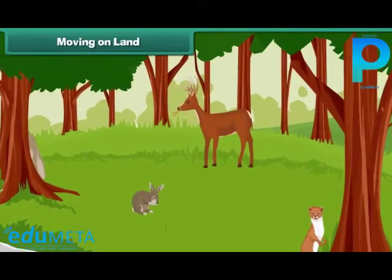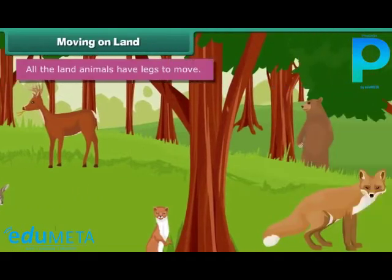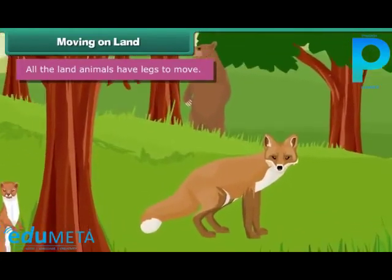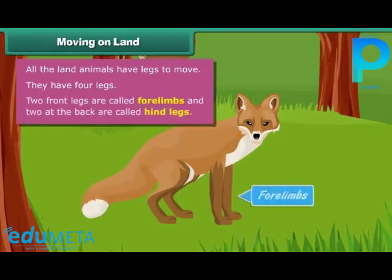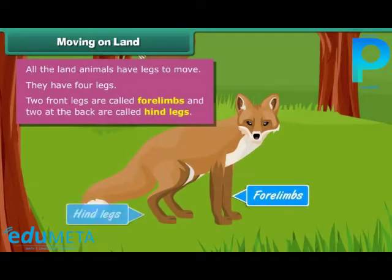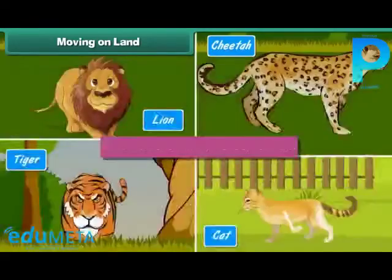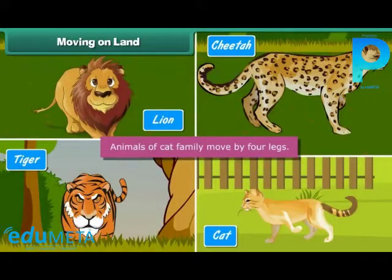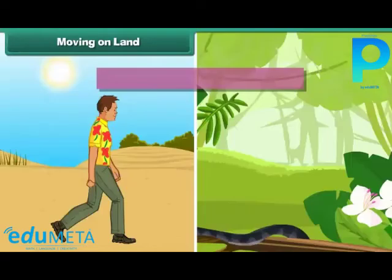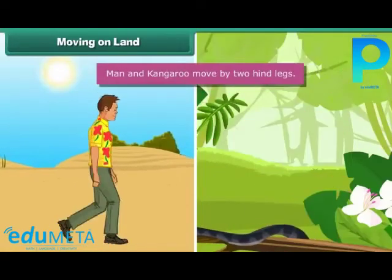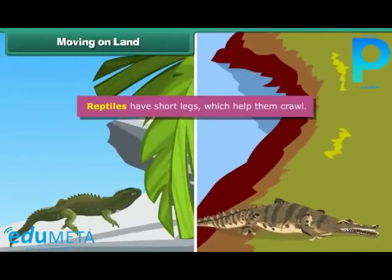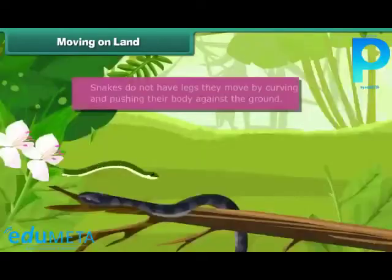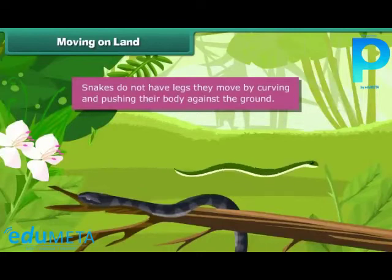Moving on land. All the land animals have legs to move. They have four legs — two front legs are called forelimbs and two at the back are called hind legs. Animals of the cat family move by four legs. Man and kangaroo move by two hind legs. Reptiles have short legs which help them crawl. Snakes do not have legs; they move by curving and pushing their body against the ground.